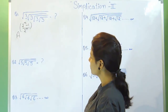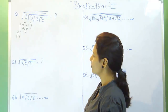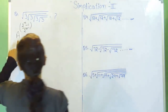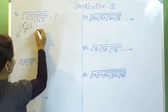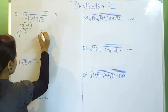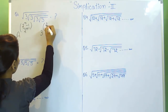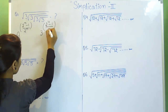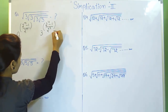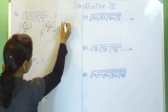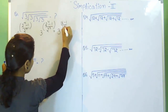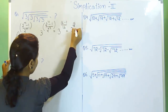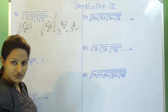Our first question is root 3, root 3, root 3, and root 3. To solve this question we have a formula. Here A is the number written under the root, that is 3. N is the number of roots. We have 4 roots and when we solve this question we get the answer. To solve this question we have a trick also.